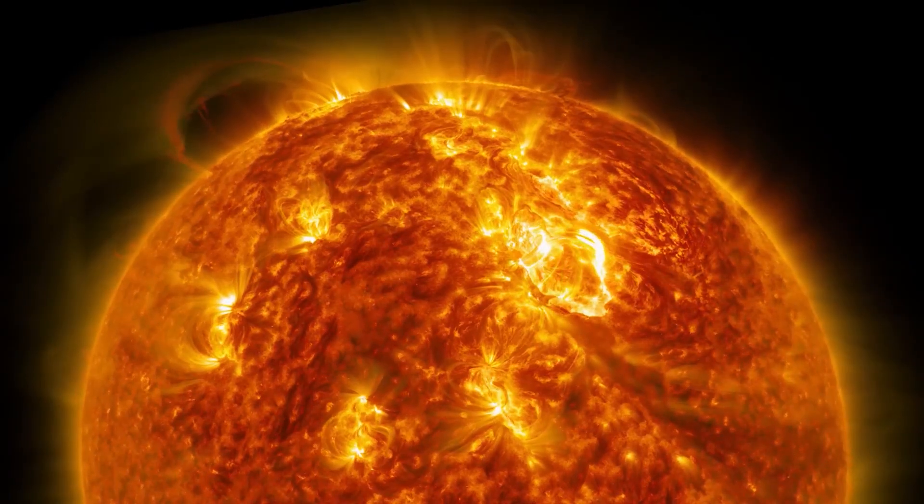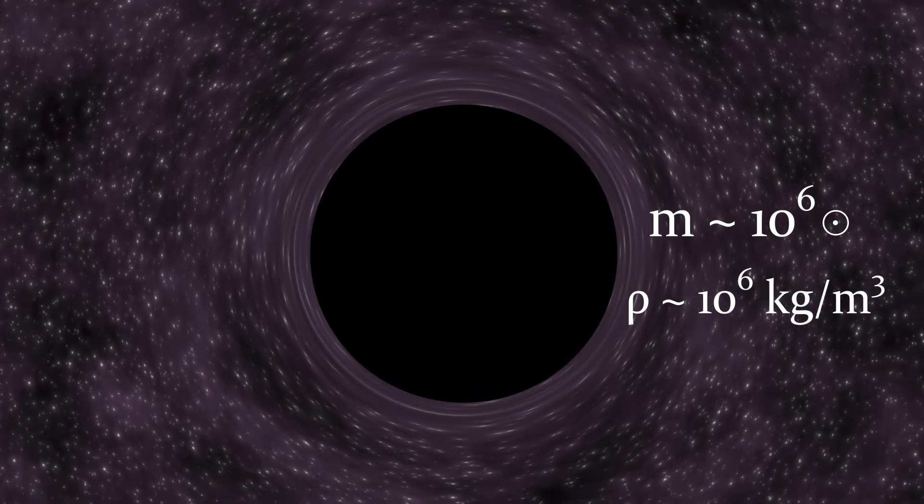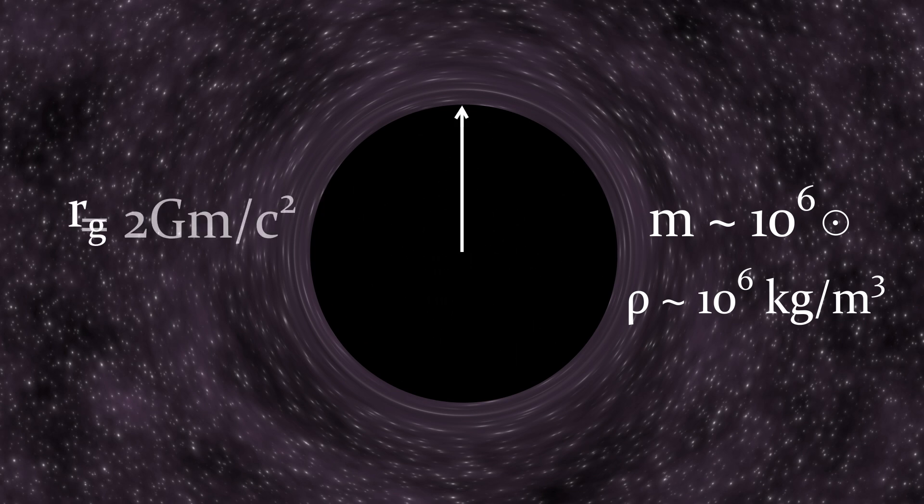However, this isn't always the case. For example, the supermassive black hole Sagittarius A star has a mass around 5 million solar masses, or 10 to the power of 37 kilograms, and a gravitational radius of about 13 million kilometers, resulting in a density of about a million kilograms per cubic meter, only a thousand times denser than water. The gravitational radius is proportional to the mass of the black hole, meaning its volume is proportional to the cube of its mass, and thus density is inversely proportional to the square of the mass.